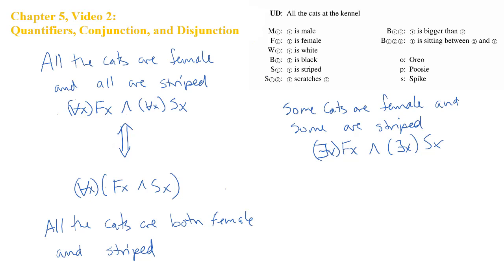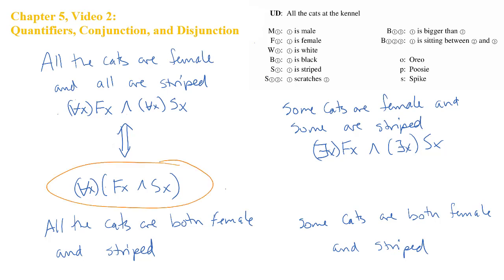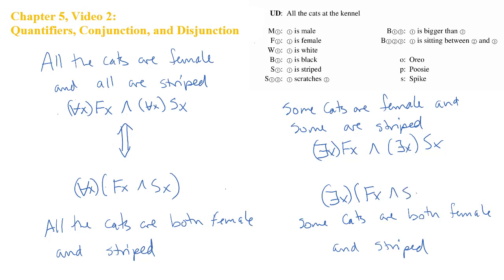You can probably guess what the next example is going to be: some cats are both female and striped. Again, this is going to have a pattern similar to the universal case syntactically. Instead of universals, we'll have existentials. So we get a single existential: at least one x in the universe of discourse is such that it is both female and striped — there's at least one female cat that is striped. Now, question: are these equivalent?